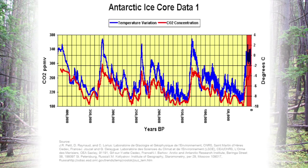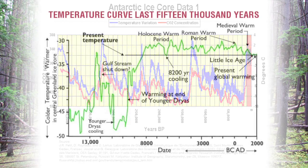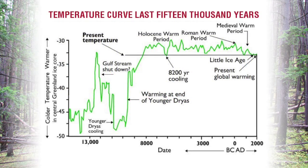If I take the last 15,000 years represented by this little box on the right side of this graph and expand it, you can see more dramatically how our climate has transitioned from an ice age period to our current 10,000-year stable climatic period.